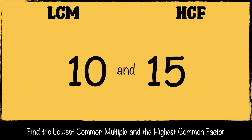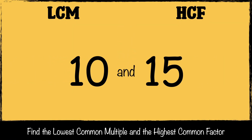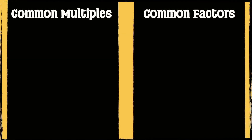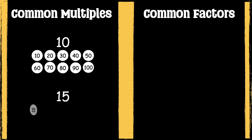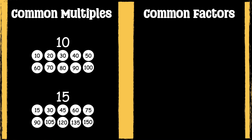For our next example, we're going to find the lowest common multiple and the highest common factor of 10 and 15. Here are some of the multiples of 10 and some of the multiples of 15. The common multiples are 30, 60 and 90.